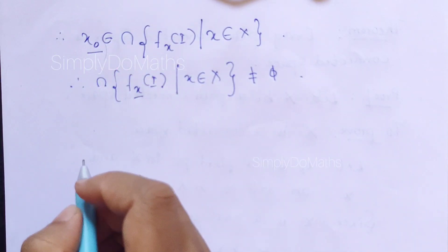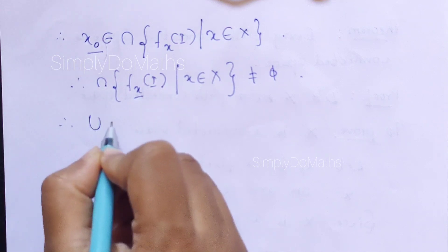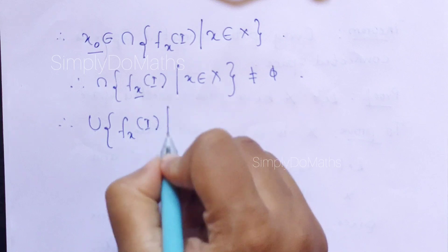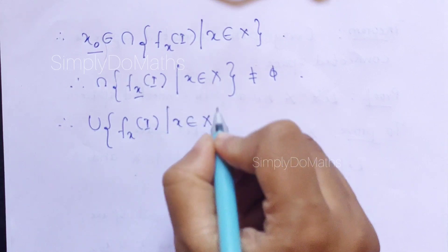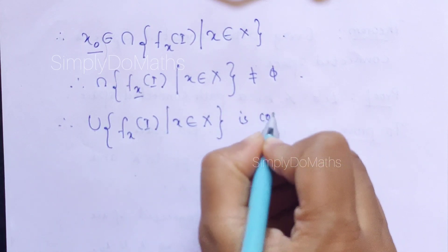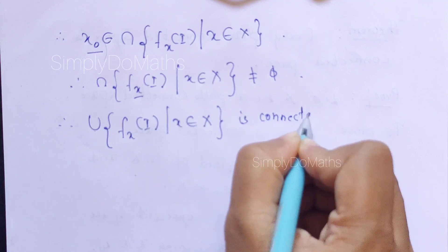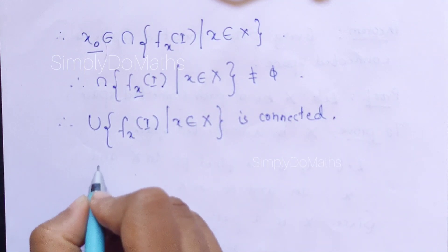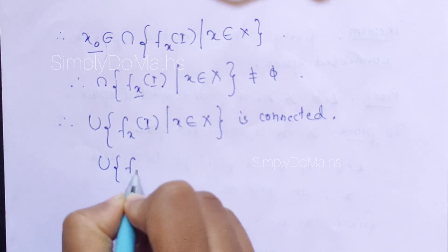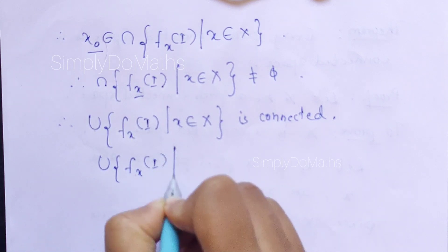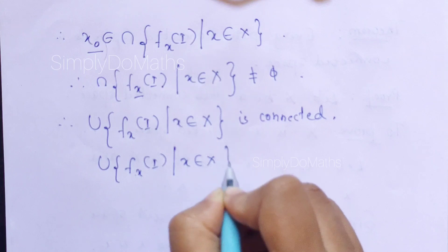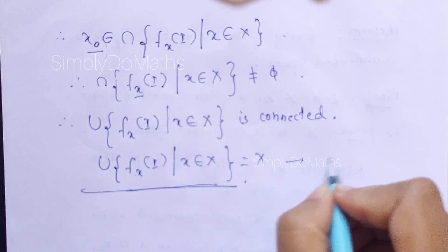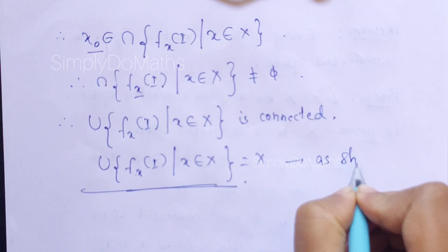Therefore, we can say that the union of f_x(I) for x belonging to capital X is connected. And also, we need to show that the union of f_x(I) for any x belonging to capital X equals X itself. This we need to show as below.